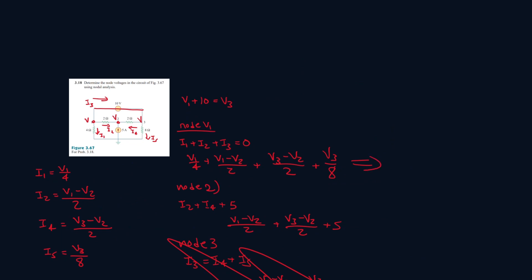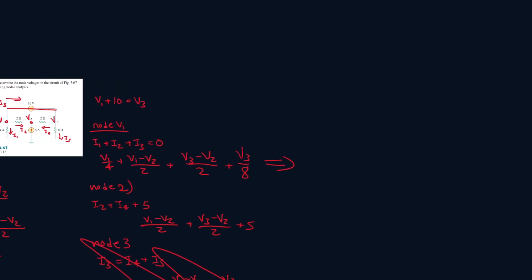Let's break this one down. V1 over 4 plus V1 over 2 gives us 0.75 V1. Then we have minus V2 over 2 minus V2 over 2 again, that gives you minus 1 V2. And then V3 over 8 plus V3 over 2, that gives you plus 0.625 V3, and this is equal to 0.